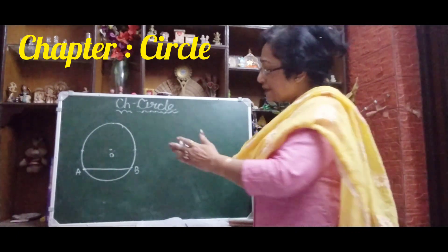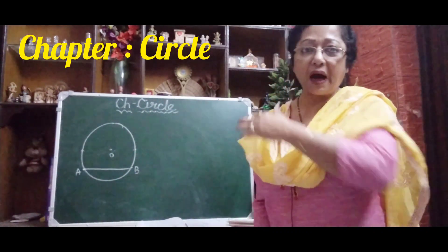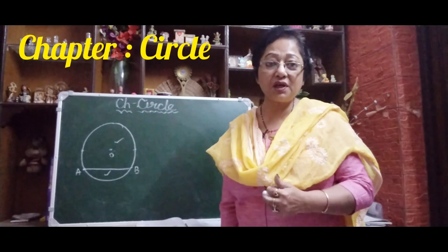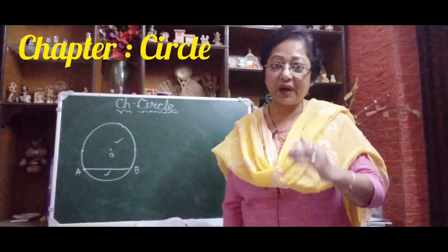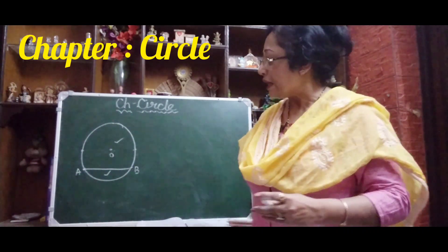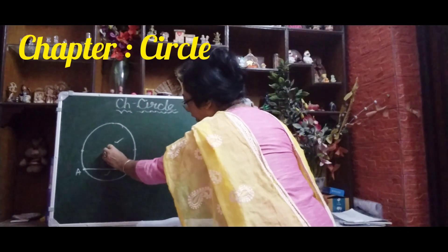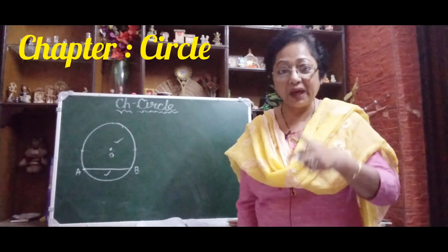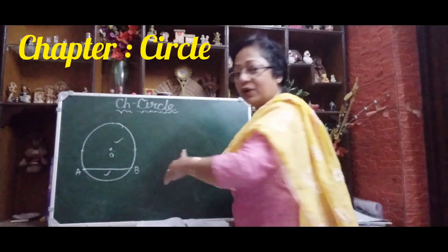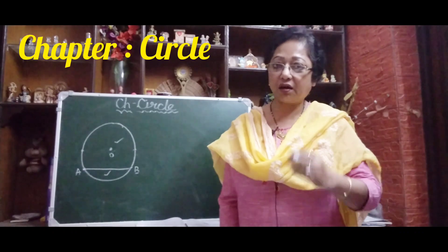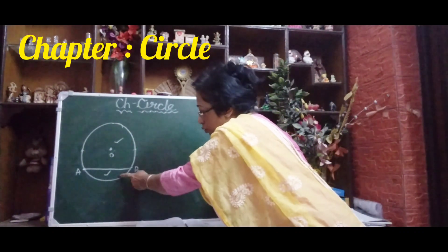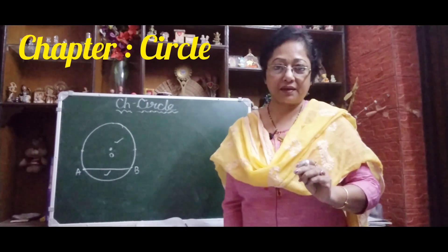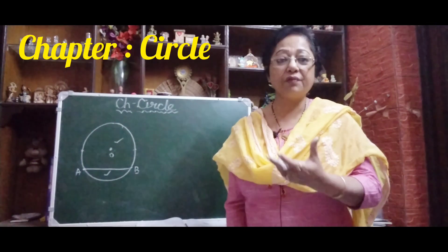You can see that this chord AB is dividing the full circular region into two parts. Each of these two parts is called a segment. The segment containing the center is called the major segment, and the part not containing the center is called the minor segment.